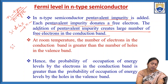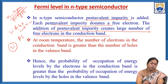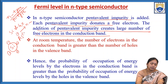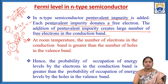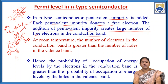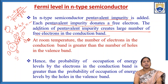For example, in silicon crystal we add fifth group elements like phosphorus, arsenic, or antimony — these have five valence electrons in the outermost orbit, but silicon has only four valence electrons. When arsenic is added to silicon, out of its five valence electrons, four form covalent bonds with the silicon crystal. The one excess electron is known as the donor electron.